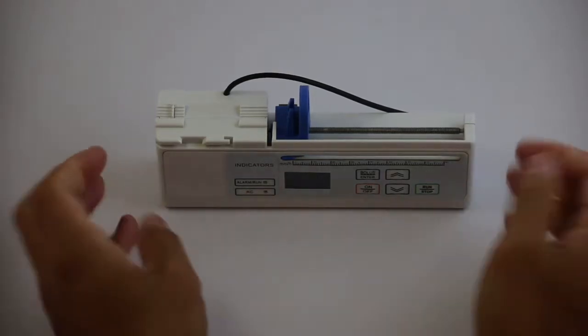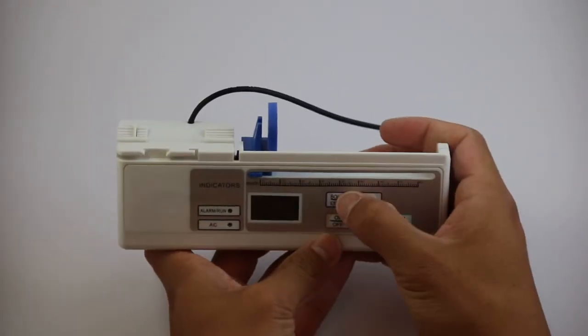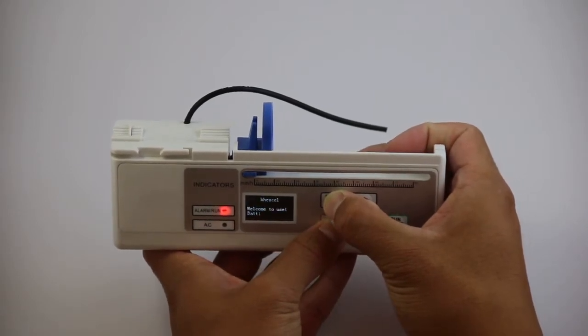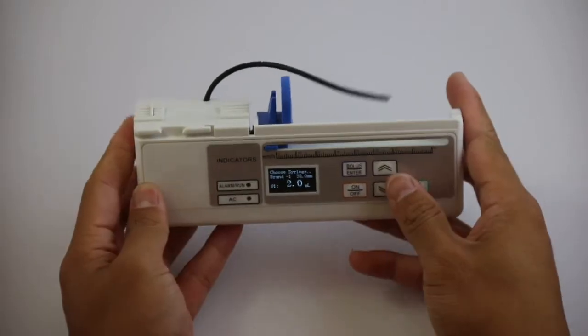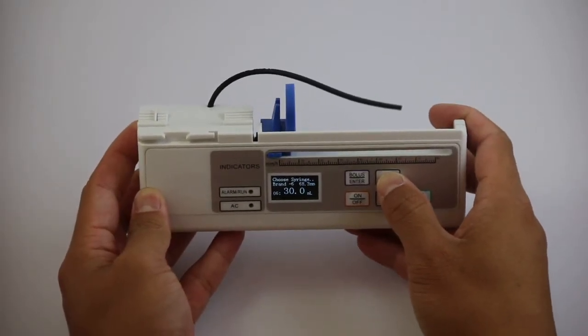To begin, ensure the machine is turned off. Whilst off, press and hold the bolus enter button while simultaneously pressing the on/off button to turn the unit on. This will initiate the settings mode where the syringes can be calibrated.